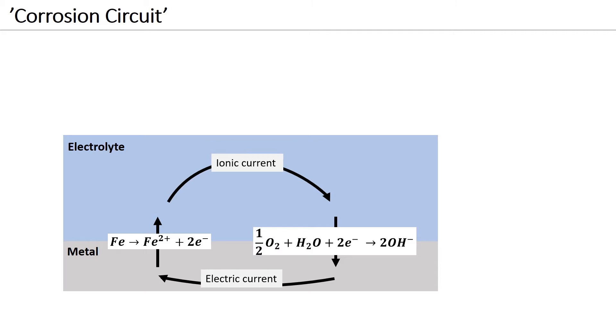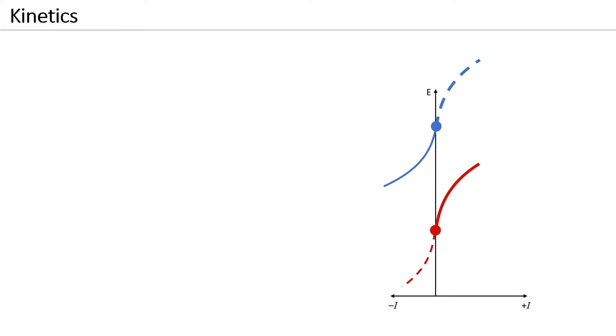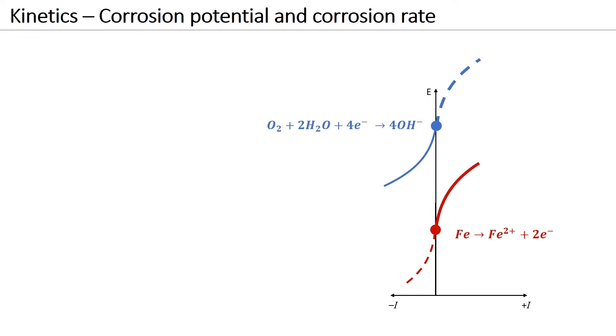The slowest of these processes determines the kinetics of the corrosion process. For uniform corrosion, the electronic and ionic current are generally not rate limiting. It is the shape of the so-called polarization curves that determine the corrosion rate. Note that the anodic and cathodic reactions must occur at the same rate, so that all the electrons released by the anodic reaction are consumed by the cathodic reaction at the same rate.